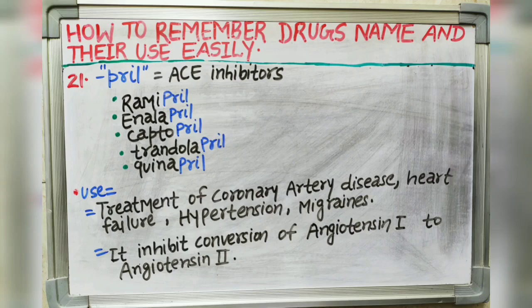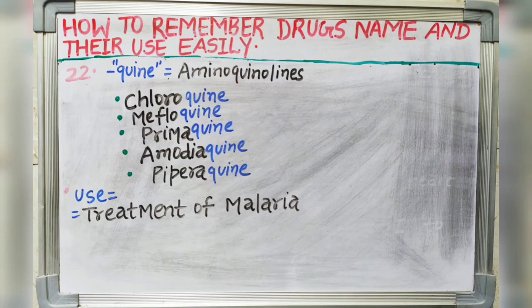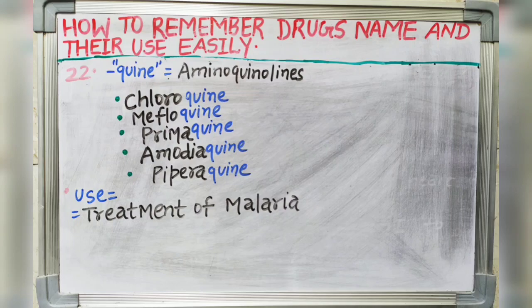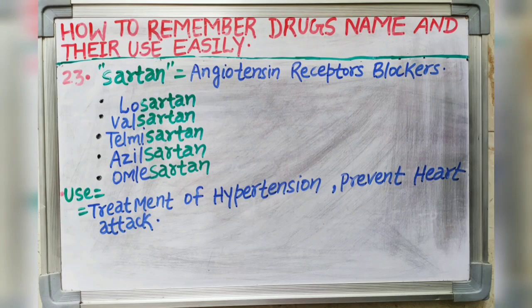Next suffix is -quine, Q-U-I-N-E. It indicates aminoquinolines. Drugs like chloroquine, mefloquine, primaquine, amodiaquine and piperaquine all end with the -quine suffix. It is used in treatment of malaria.